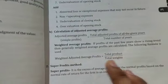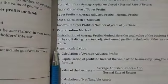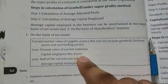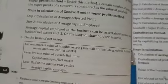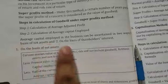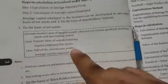For the super profit method, it has five steps. The first step is calculation of average capital employed. On the basis of net assets: market value of assets minus liabilities, then minus half of the current year's profit. On the basis of shareholders' interest: add profit on revaluation of assets and liabilities.